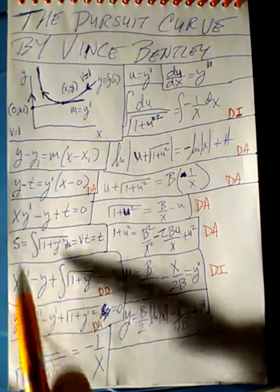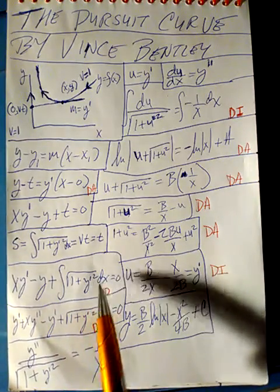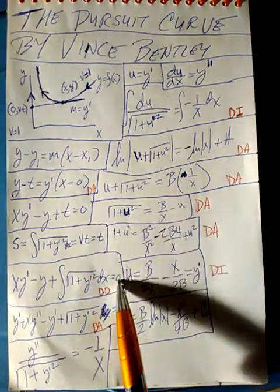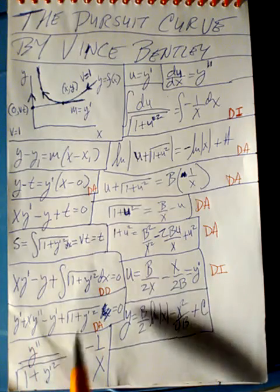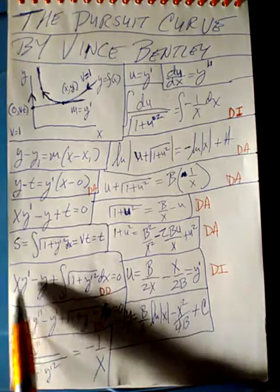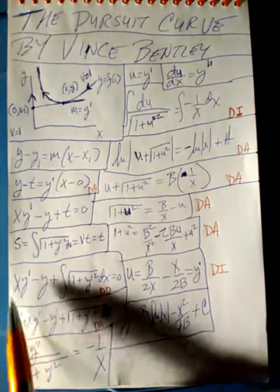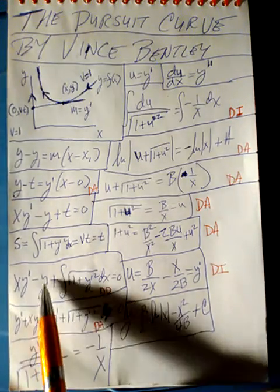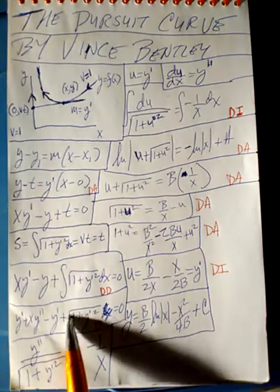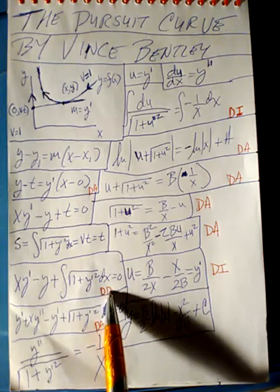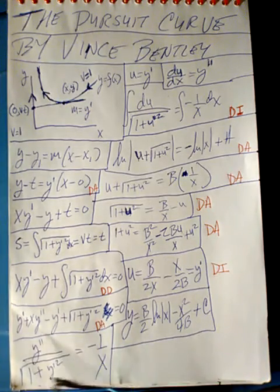Substituting the arc length integral in for t, we get an integro-differential equation: x times y prime minus y plus the integral of the square root of (1 plus y prime squared) dx equals zero. Taking the derivative of this equation, the derivative of x times y prime gives x times y double prime, minus y prime plus y prime, and the derivative of the integral is just its integrand, the square root of (1 plus y prime squared), all equal to zero. With a little algebra, this simplifies to a cleaner differential equation.